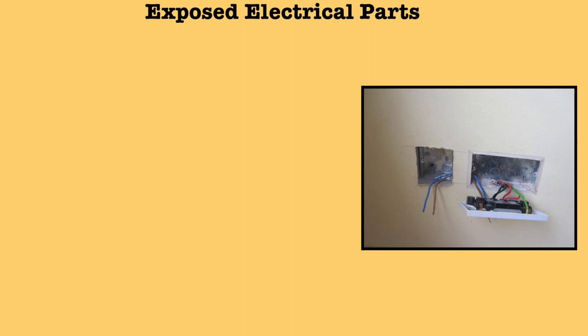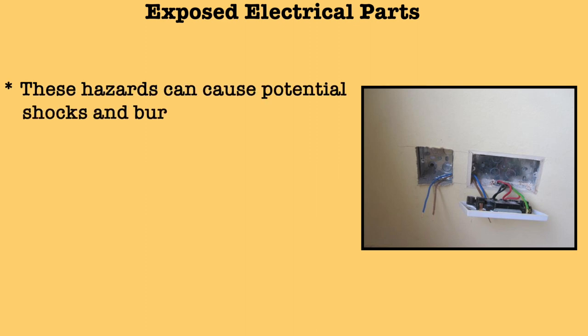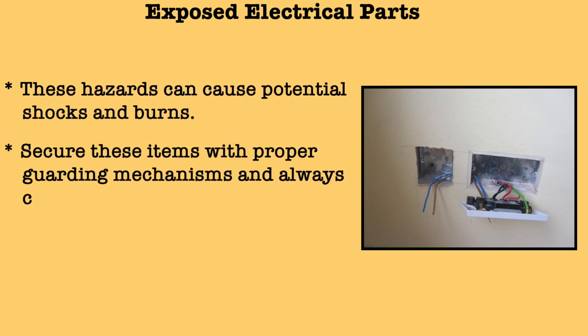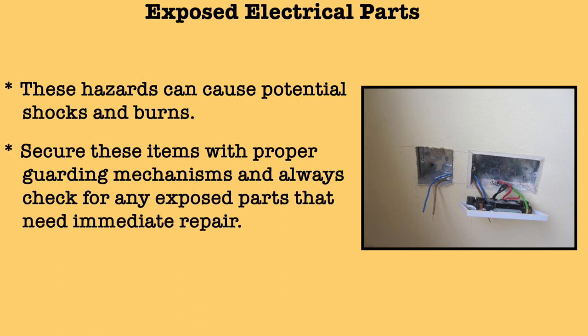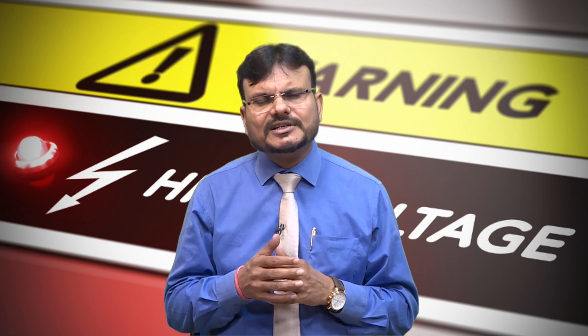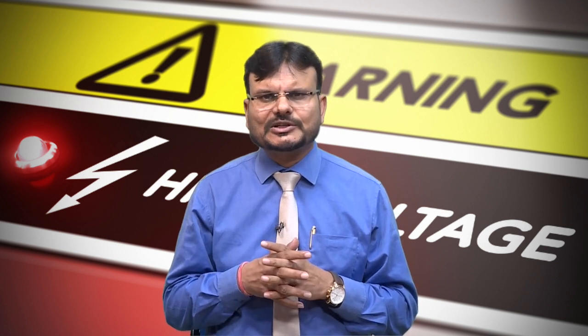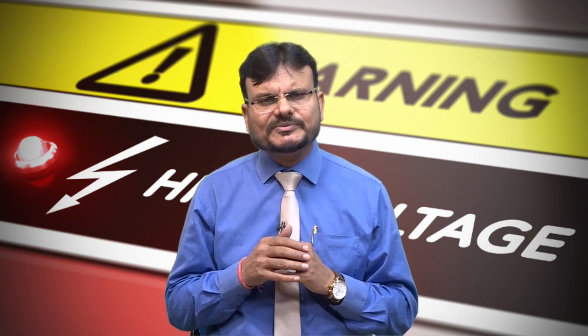Exposed electrical parts can cause potential shock and burns. Secure these items with proper guarding mechanisms and always check for any exposed parts that need immediate repair. Regarding improper grounding — the most common OSHA electrical violation is improper grounding of equipment. Proper grounding can eliminate unwanted voltage and reduce the risk of electrocution. Never remove the metallic ground pin, as it is responsible for returning unwanted voltage to the ground.